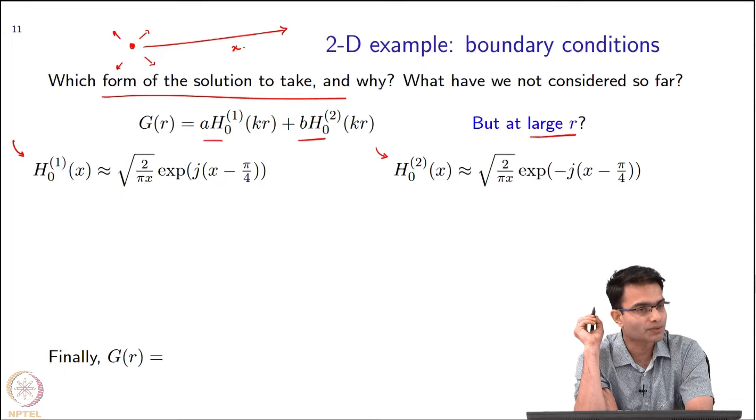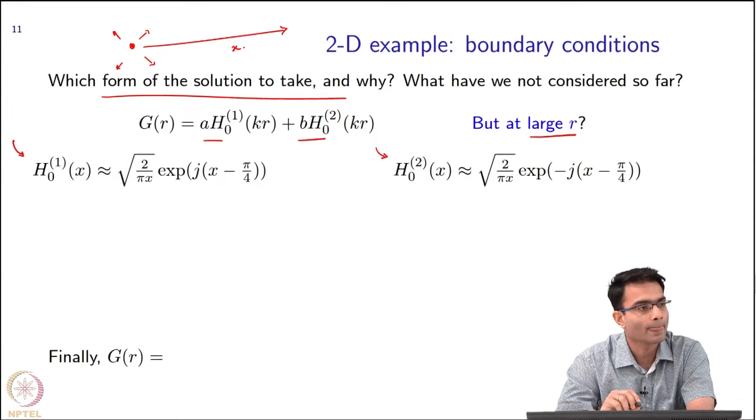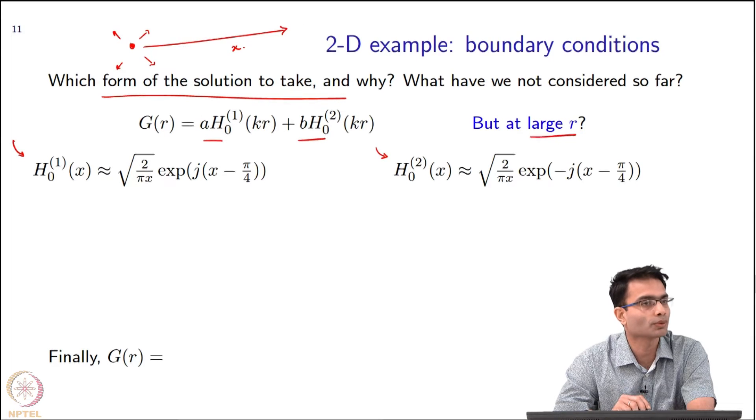Looking at this, do you get an intuition of which form is physically acceptable? Second one because... Decaying. Both are decaying. Both are decaying. Both have the amplitude root 2 by πx. So at large x both go to zero.